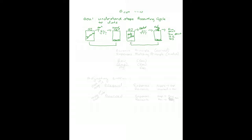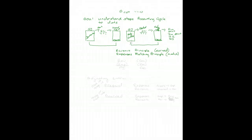That is our accounting cycle to date. The adjusting entries that we learned to make were based on the revenue principle, which says record revenue in the period it is earned. It doesn't matter if you received it in advance or haven't received it yet. And record expenses against that revenue according to the matching principle.